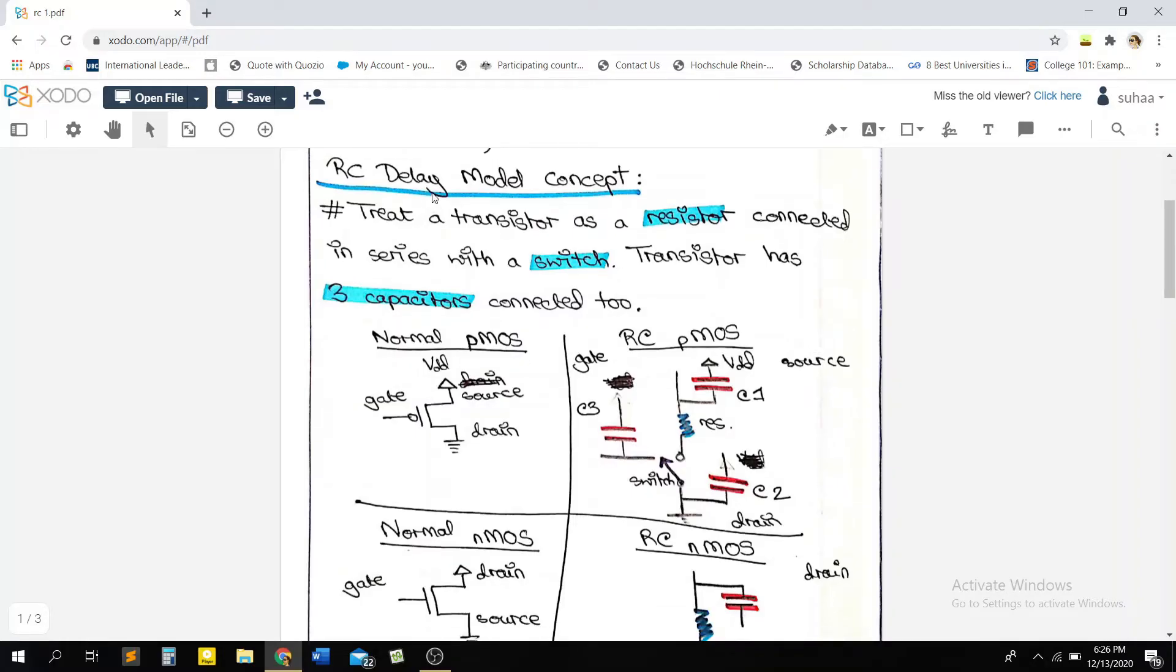So the RC Delay model concept is basically representing a transistor in terms of three capacitors, one resistor, and one switch. That is the basic RC Delay model concept.